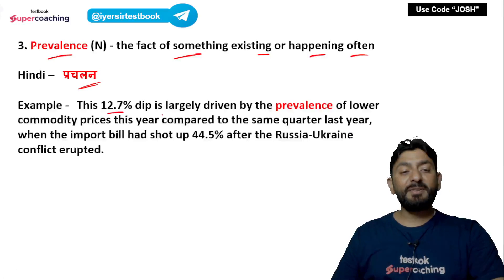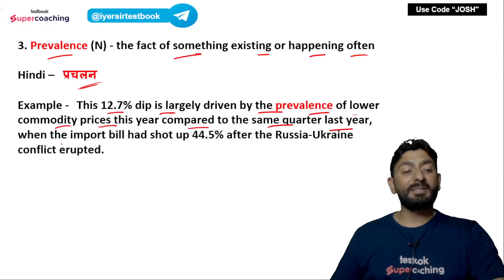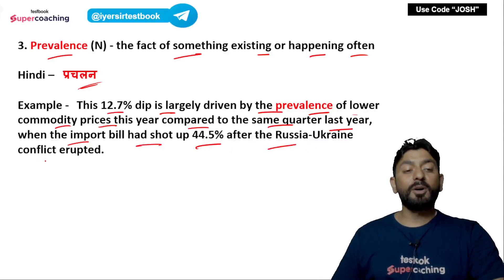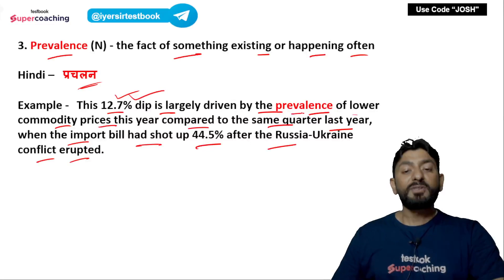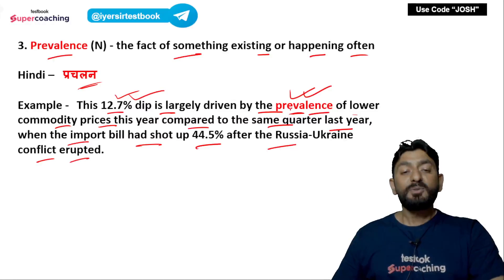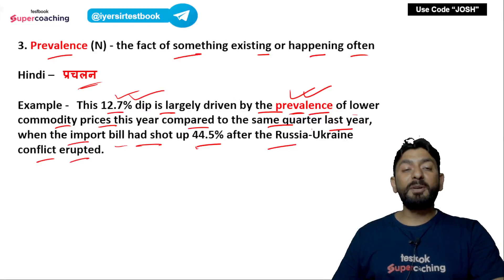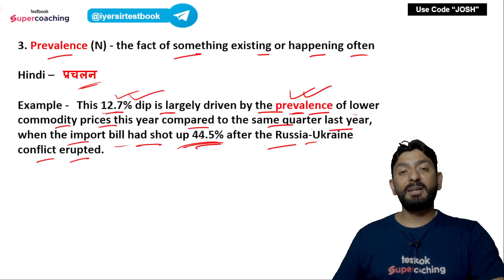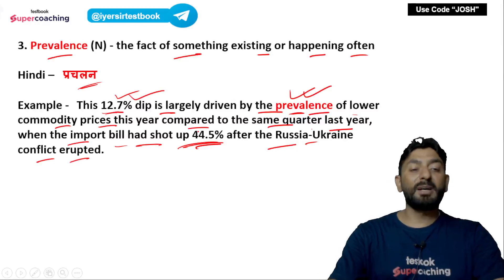Sentence: This 12.7% dip is largely driven by the prevalence of lower commodity prices this year, compared to the same quarter last year, when the import bill had shot up 44.5% after the Russia-Ukraine conflict erupted. अभी 12.7% dip जो है वो जादातर lower commodity prices के प्रचलन के कारण है — जबकि पिछले साल Russia-Ukraine war के कारण import bill 44.5% तक बढ़ गया था.